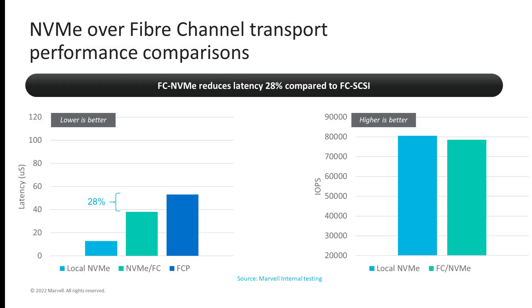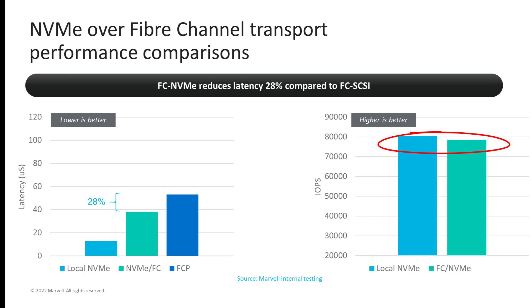The same story holds true when comparing FC NVMe to local NVMe storage and standard Fibre Channel connectivity. FC NVMe delivers 28% lower latency than SCSI-based Fibre Channel, as shown in the graph on the left, and FC NVMe IOPS performance is almost the same as native NVMe, as shown in the graph on the right.